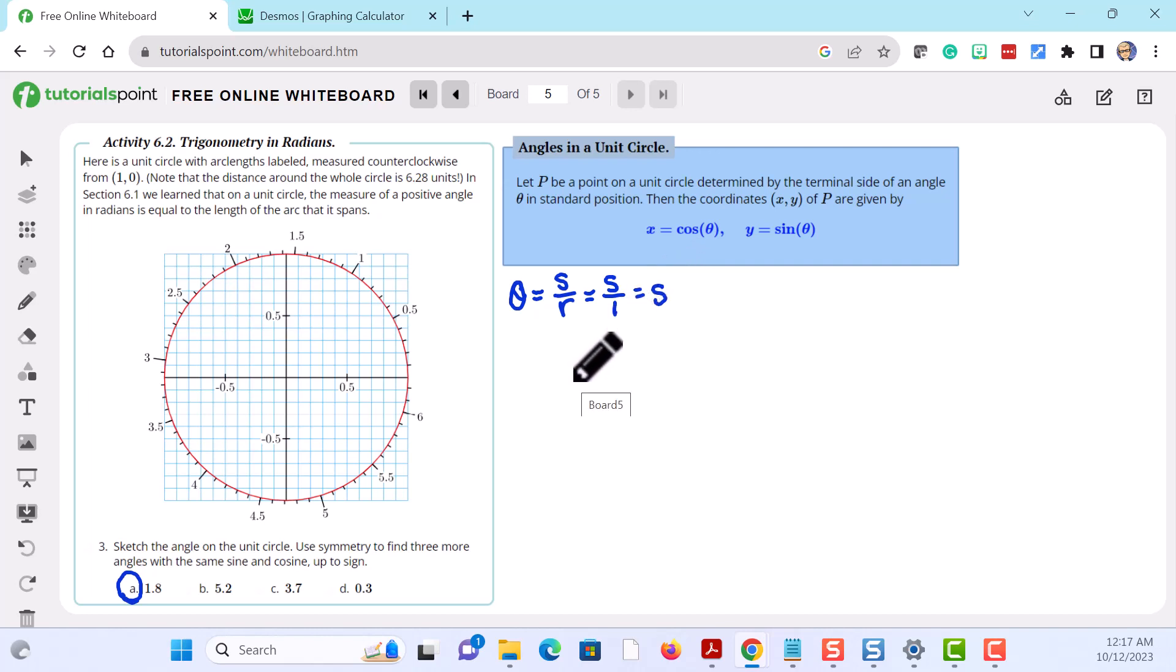So finding or sketching the angle, the first step would be to locate an arc length of 1.8. So we start at the point (1,0) and we measure counterclockwise until we get to 1.8.